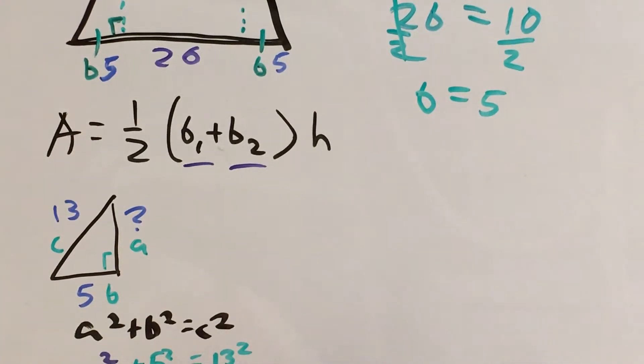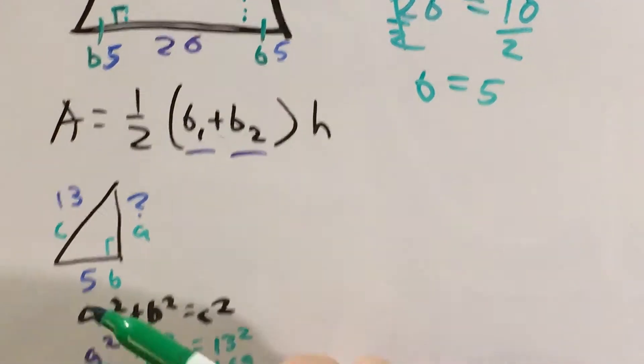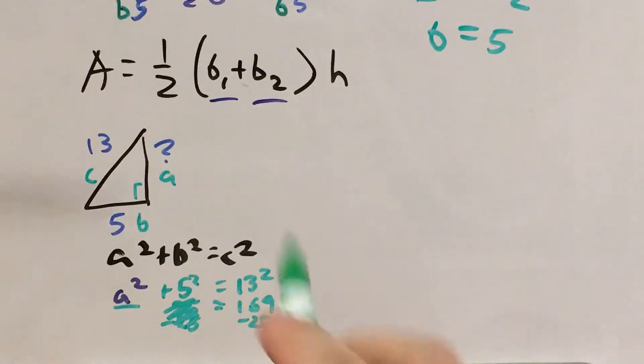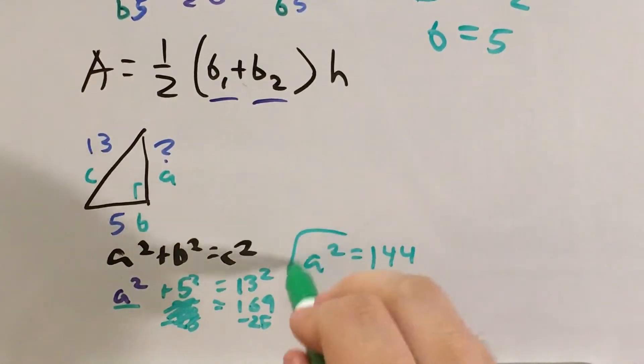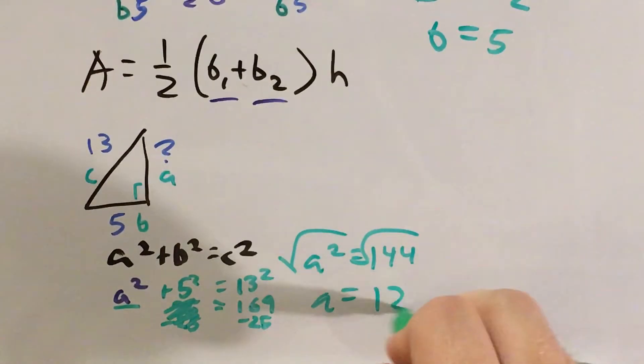So I'm looking for some number plus 25 to equal 169. So I can subtract 25 from both sides of this equation. Let me scoot that up so y'all can see. Which gives me a squared equals 144. And if I take the square root of both sides, I'll get that just a equals 12.